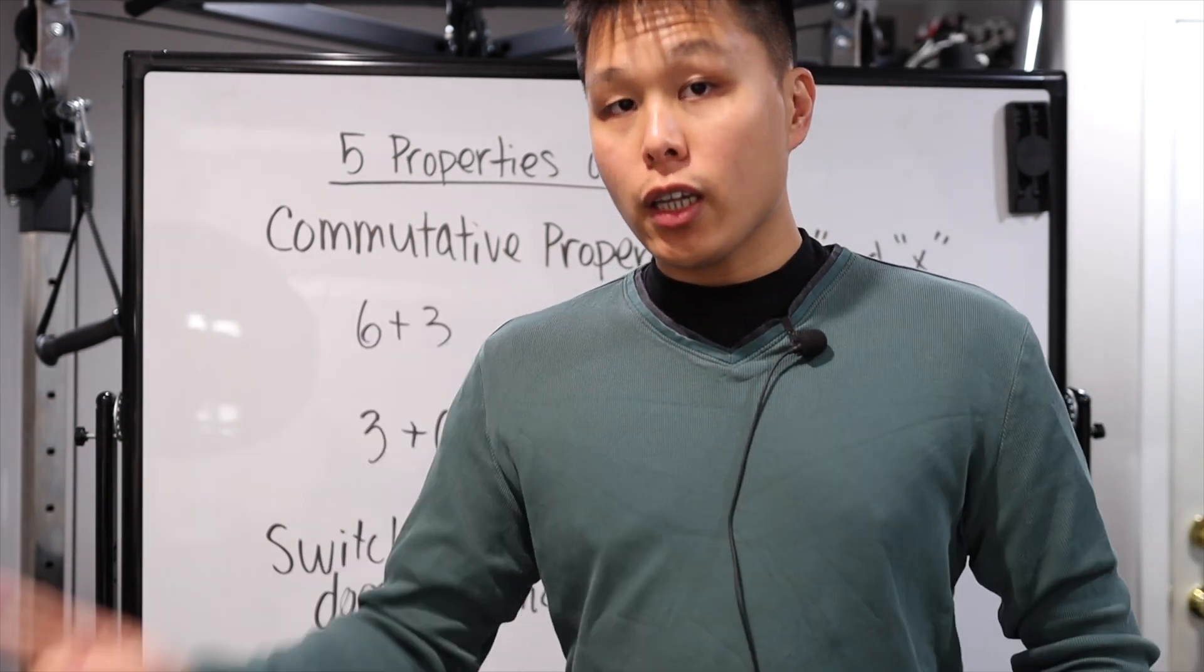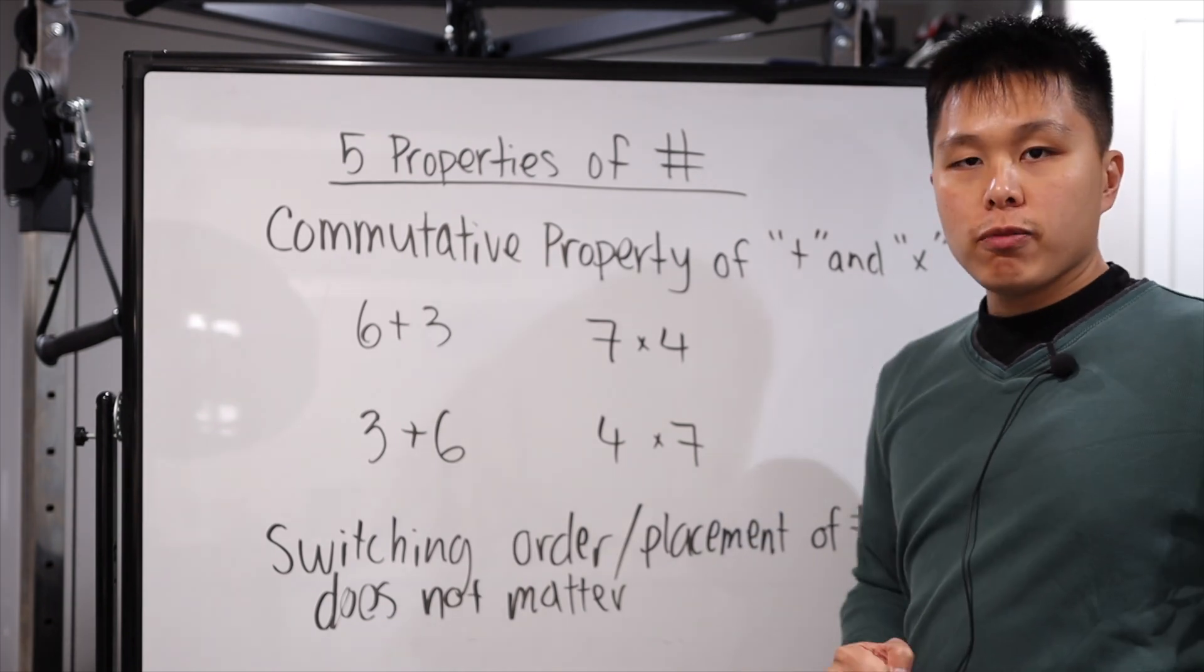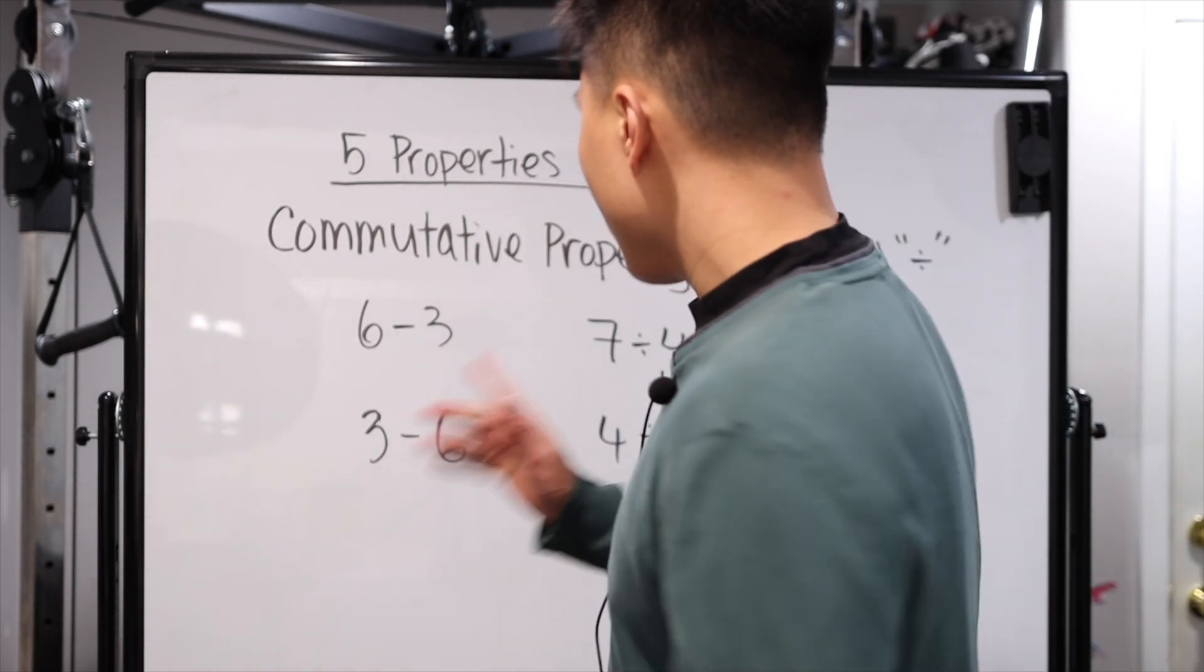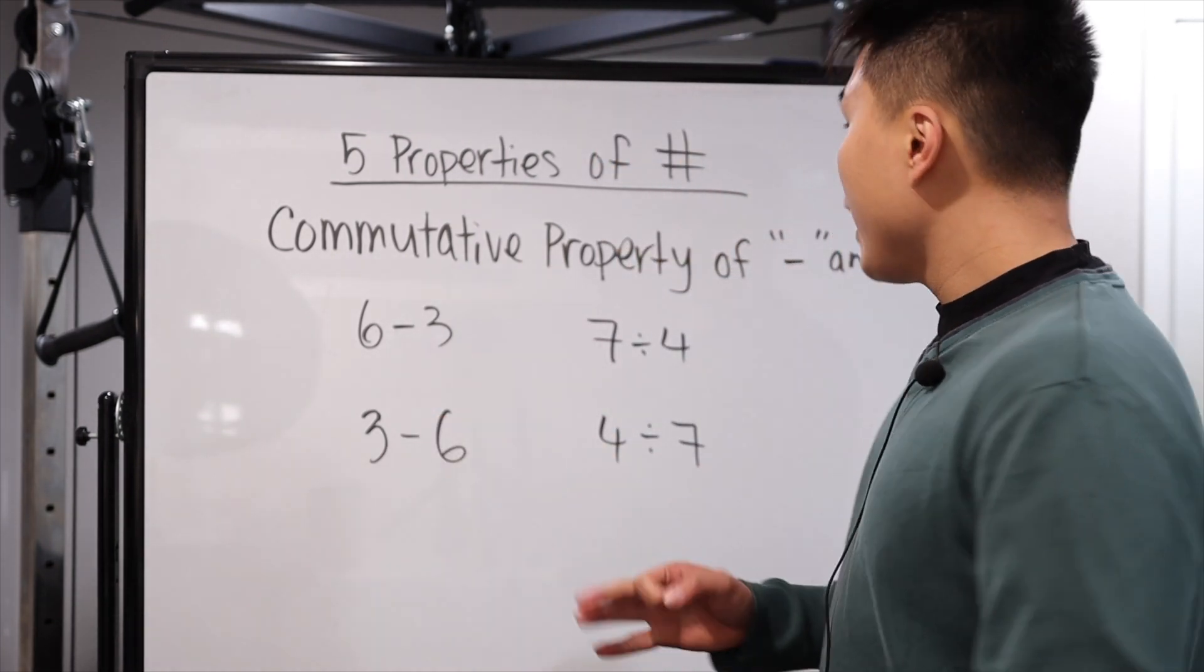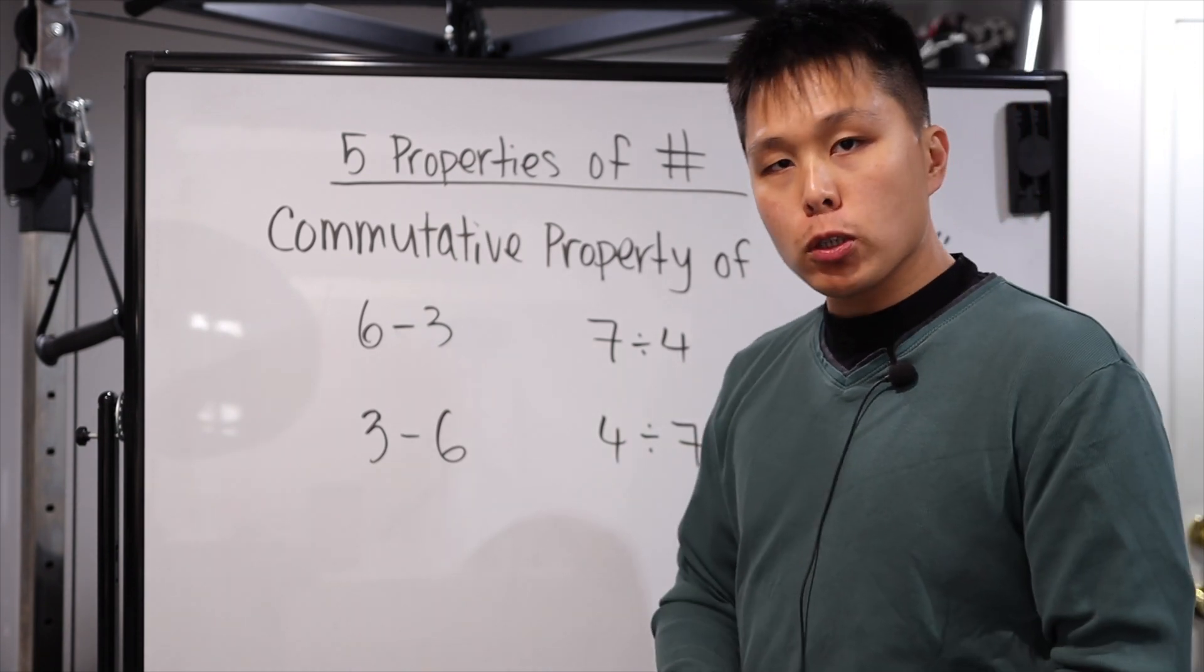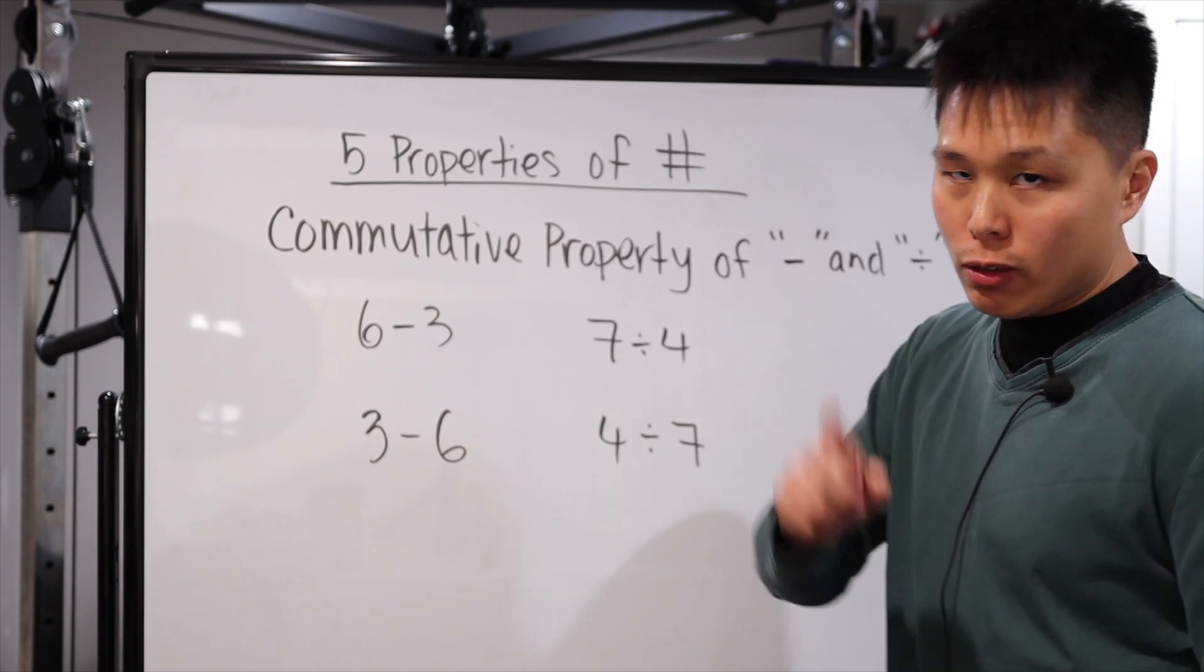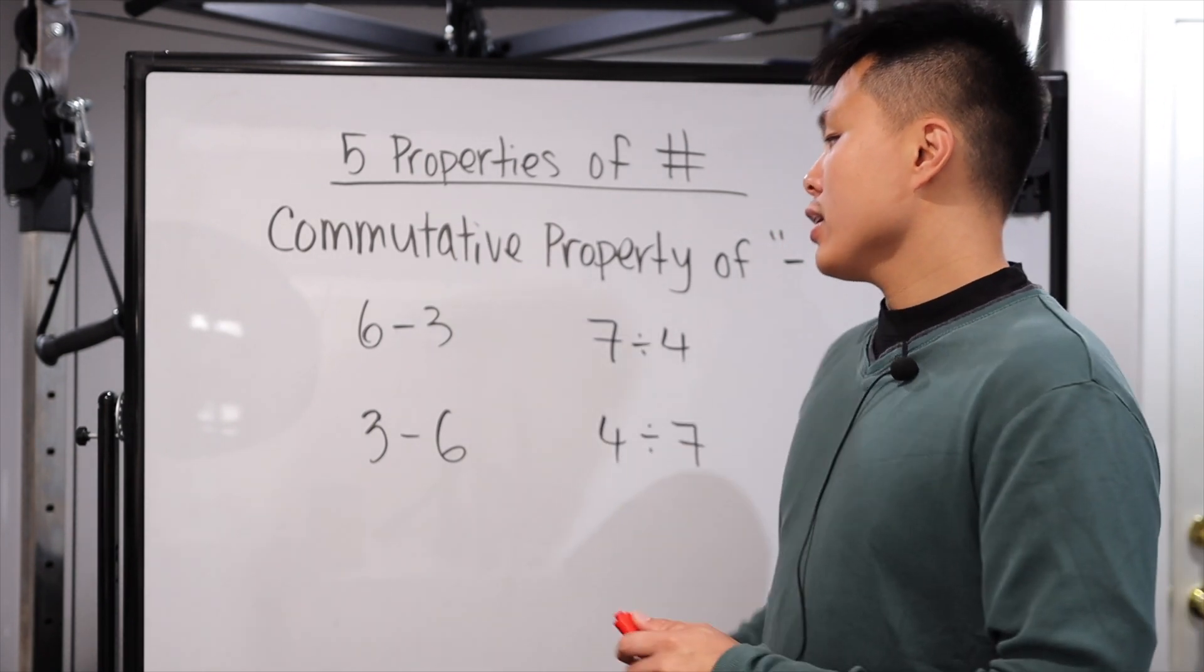Once again, let's look at the common mistake that people would create regarding commutative property. So you guys can sort of guess what the common mistake is. Once again, if you assume that because commutative property works for multiplication and addition, that it should work for subtraction and division as well. Not the case.